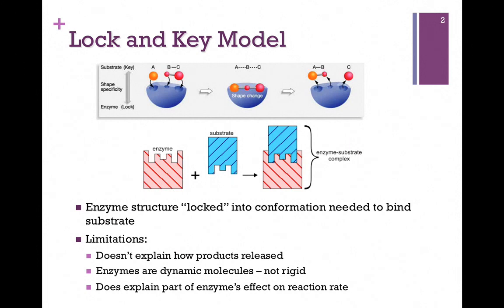It was Emil Fisher who first proposed what was called the lock and key model of substrate binding. In other words, enzymes were locked into the conformation they needed to be in to bind substrate. In the figure at the top, here's our enzyme in blue and it's in the perfect conformation to bind its substrates. In this model, the enzyme is the lock and the substrate or substrates are the key that so perfectly fits that lock. Notice this is simply a model for how an enzyme binds substrates, and there certainly are many examples that follow this model.